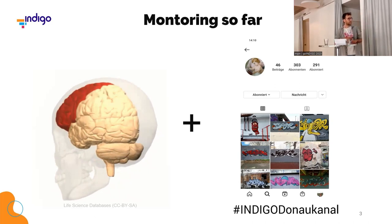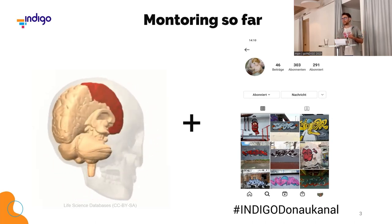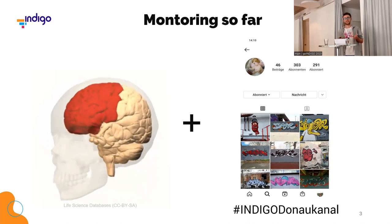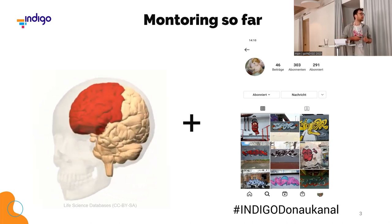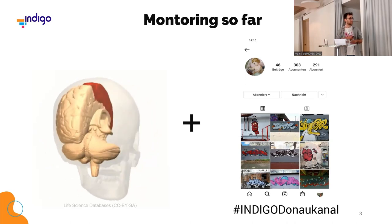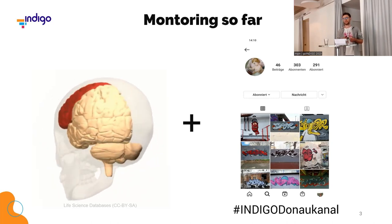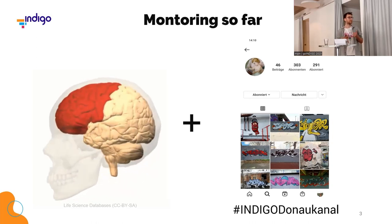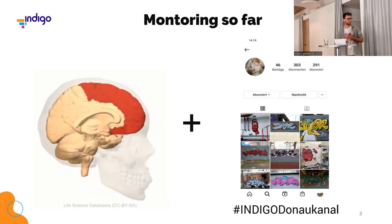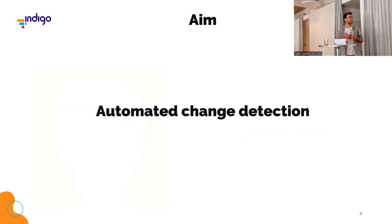He doesn't just rely on his memory — we also used Instagram. He spotted a lot of new works because, as we've seen, the artists or creators share their work often on Instagram, and we can pick that up. We've also established an Indigo-specific hashtag — 'Indigo Danube Canal' — which is already being used by some creators, and that helps us a lot to filter for new works. But we still missed a lot of new graffiti, which is why we needed some automated way of change detection.